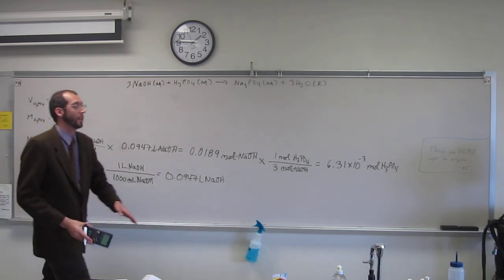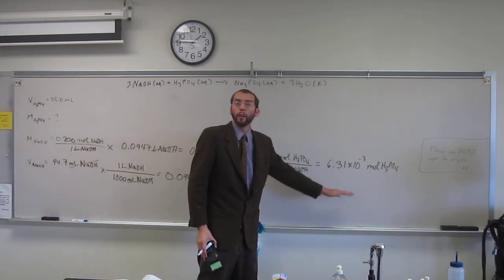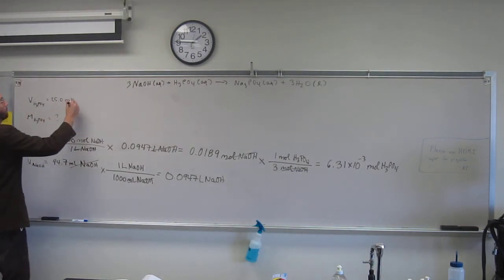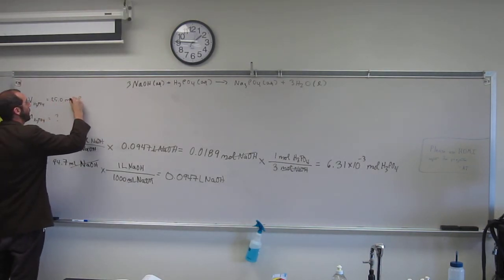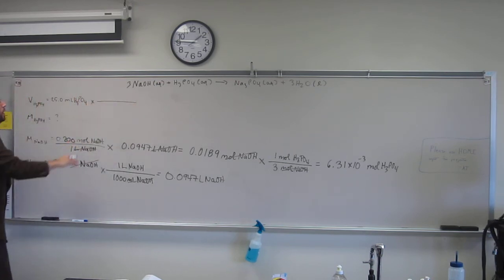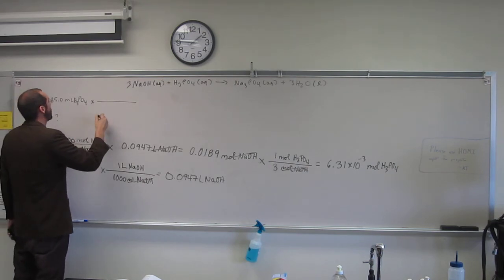So notice, this is a different number than what we had before, okay, with the acetic acid problem. But we know how many mils of phosphoric acid we've got. So what do we need to do? Convert this to liters.